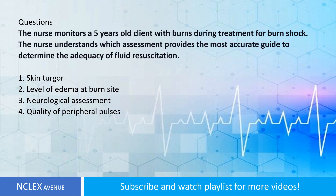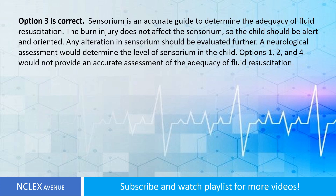The nurse monitors a 5-year-old client with burns during treatment for burn shock. The nurse understands which assessment provides the most accurate guide to determine the adequacy of fluid resuscitation? 1. Skin turgor. 2. Level of edema at burn site. 3. Neurological assessment. 4. Quality of peripheral pulses. Answer: Option 3 is correct. Sensorium is an accurate guide to determine the adequacy of fluid resuscitation.